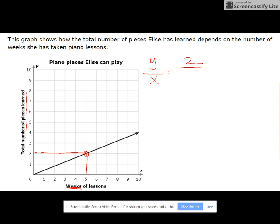So that's going to be 2 and 5. So we take 2 divided by 5. If you divide 2 by 5, you get 0.4. It's 4 tenths. So that's going to be 4 tenths. And again, look to y for what the label is. 4 tenths pieces learned per week. You can put week of lessons if you want also.